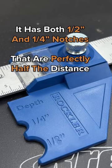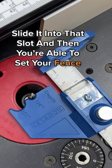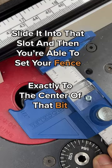All you have to do is use the shank of your router bit, slide it into that slot, and then you're able to set your fence exactly to the center of that bit. If you want to cut dados, grooves, anything like that and need it precise, this is what you need.